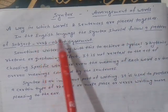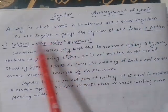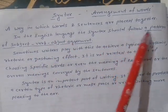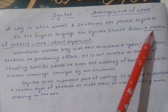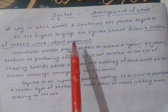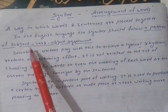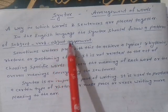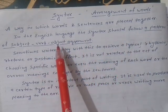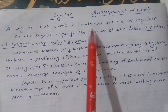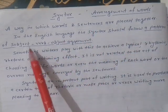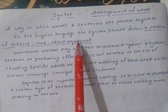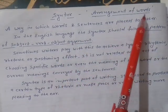In the English language, the syntax should follow a particular pattern or a rule. That pattern is of an agreement — agreement of subject, verb, and object. This pattern or rule is very important and that is called syntax: a pattern of subject, then verb, and then object. This agreement is called the arrangement of words.